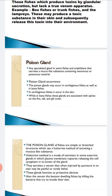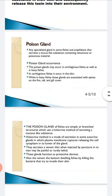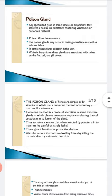These poison glands can be simple or branched, and they use a holocrine method of secreting mucus. In the holocrine method, the plasma membrane ruptures and releases the cell's cytoplasmic contents. They secrete a venom — when the cells rupture, they contain the venom and it is injected. These glands function as a protective device, allowing the fish to protect themselves.